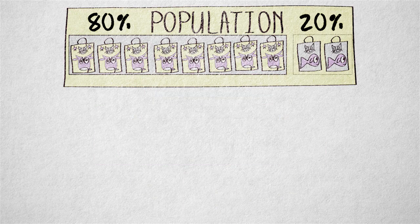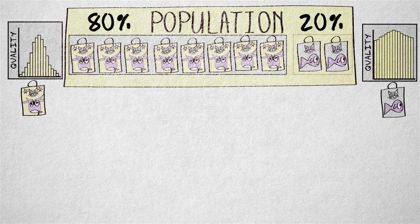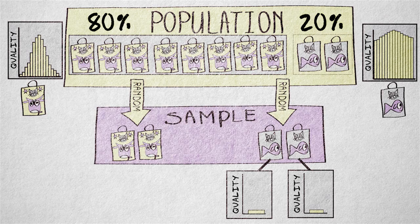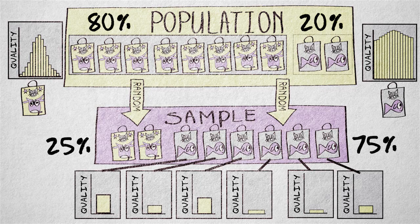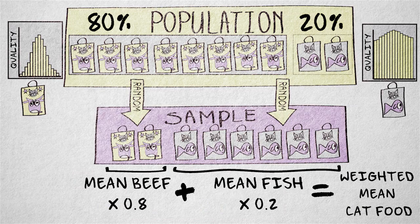We can calculate a representative estimate by weighing the subsamples according to stratum size. Suppose our stratum of fish cat food is relatively small, or is known to strongly vary in quality. In both cases, our estimate of the quality of fish cat food might be much less likely to be accurate than that of beef cat food. It might be worth it to take a bigger sample of fish cat food, so we have a better chance of getting an accurate estimate. This means overrepresenting fish cat food. We can correct for this overrepresentation by weighing the separate estimates of fish and beef cat food according to their stratum sizes before averaging them into an overall estimate of food quality. This way, the sample value is representative, efficient, and more likely to be accurate.